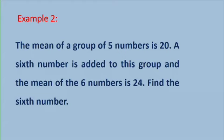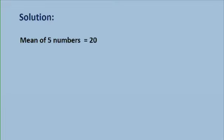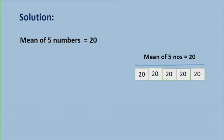Now let us look at the second example. The mean of a group of five numbers is 20. A sixth number is added to this group, and the mean of the six numbers is now 24. You need to find the sixth number. So the solution is: mean of five numbers is given as 20. So we have five numbers and the mean is 20. So the total of the five numbers will be 20 times 5, which is 100.